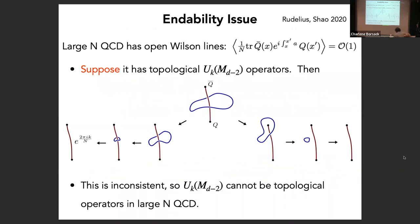Let me start with the endability obstruction. This phrase and the general argument goes back to a paper by Tom Redelius and Xu-Heng Xiao. It essentially states that if you think you have a one-form symmetry, you should look for obstructions based on whether the lines which are charged under the one-form symmetry can be endable. Large N QCD certainly has endable Wilson lines: just take a Q-bar and a Q separated by some distance and attach a Wilson line between them. Those open Wilson lines have order-one expectation values at large N. We assume for the sake of contradiction that topological operators exist — topological up to 1/N corrections.